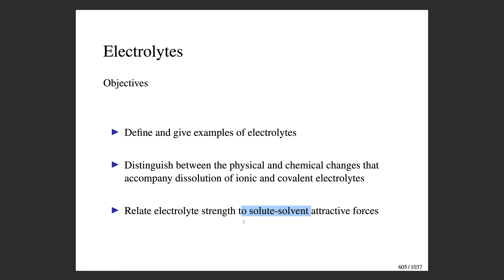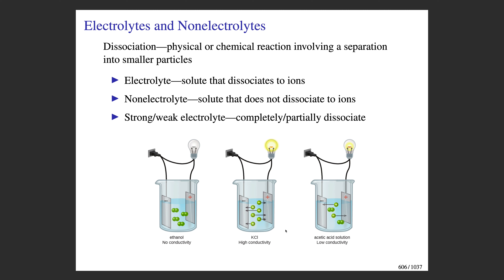We'll talk about the energetics of ionic electrolytes. This slide introduces some basic definitions. The term dissociation refers to a physical or chemical reaction that involves the separation of a species into smaller particles. An electrolyte is a solute that dissociates into ions, and that electrolyte can be either an ionic compound or a molecular covalent compound. A non-electrolyte refers to a solute that does not dissociate into ions.